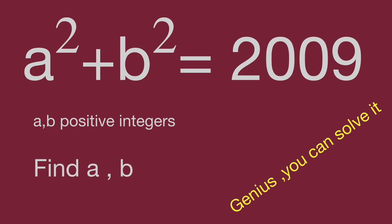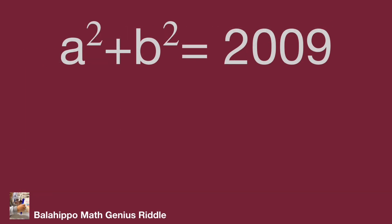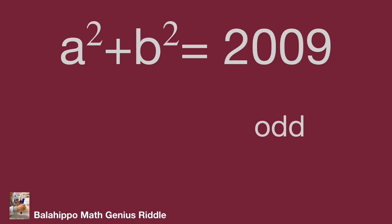Keep watching the video to know the solutions. The given information: a squared plus b squared equals 2009, and a and b are positive integers. How should we handle it? First, start from the number 2009. 2009 is an odd number, and equals the sum of two numbers. If two numbers add up to become an odd number, then one must be odd and the other must be even.